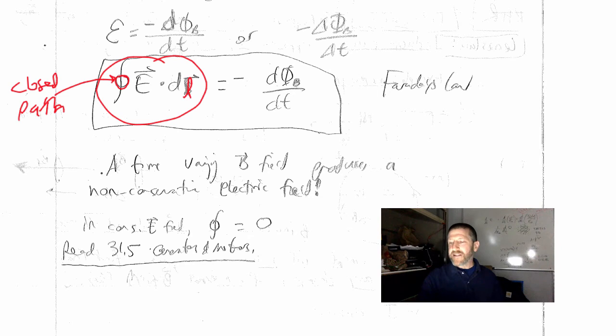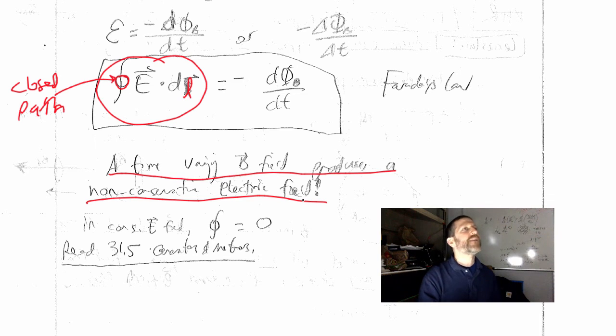Bottom line here is that a time-varying magnetic field produces a non-conservative electric field. Now what the heck does that mean, non-conservative? If you have a conservative field and I start here and I do this crazy, crazy thing and I end right there, how much work is the field done if I start there and end there? Zero. Zero. This is non-conservative.